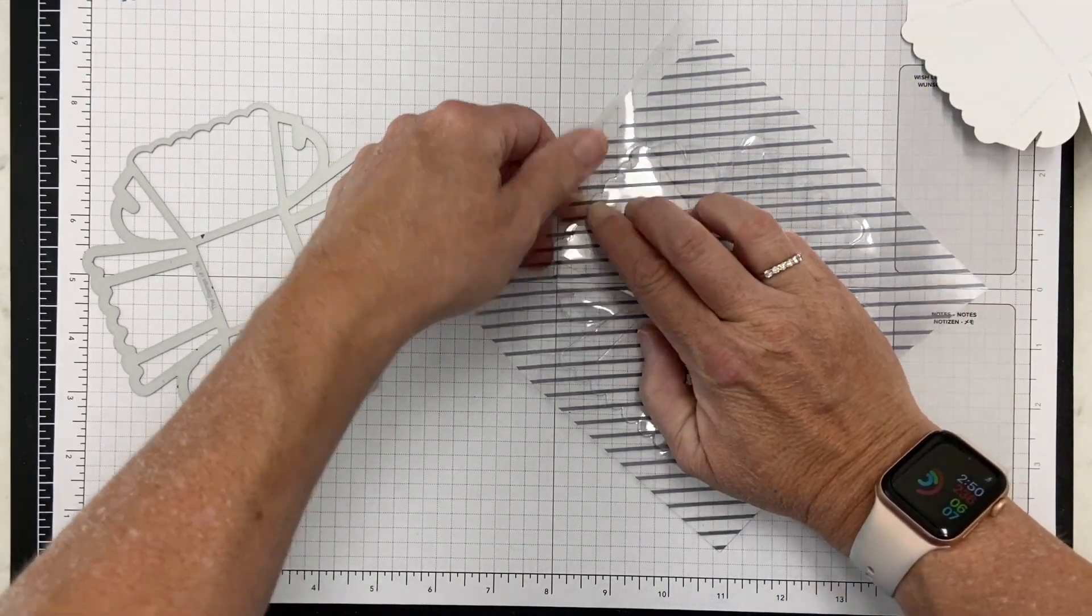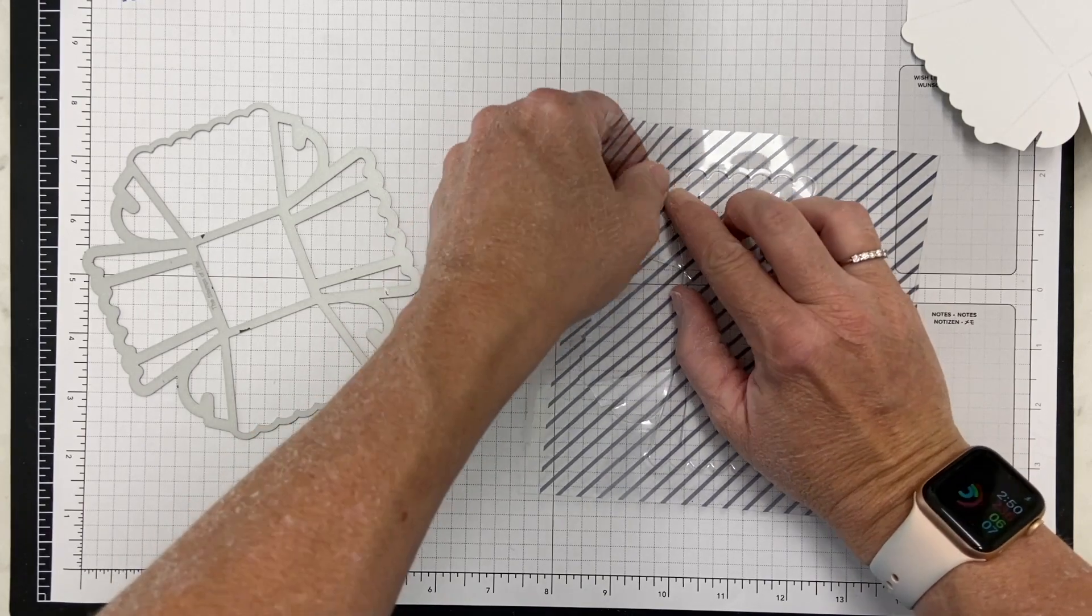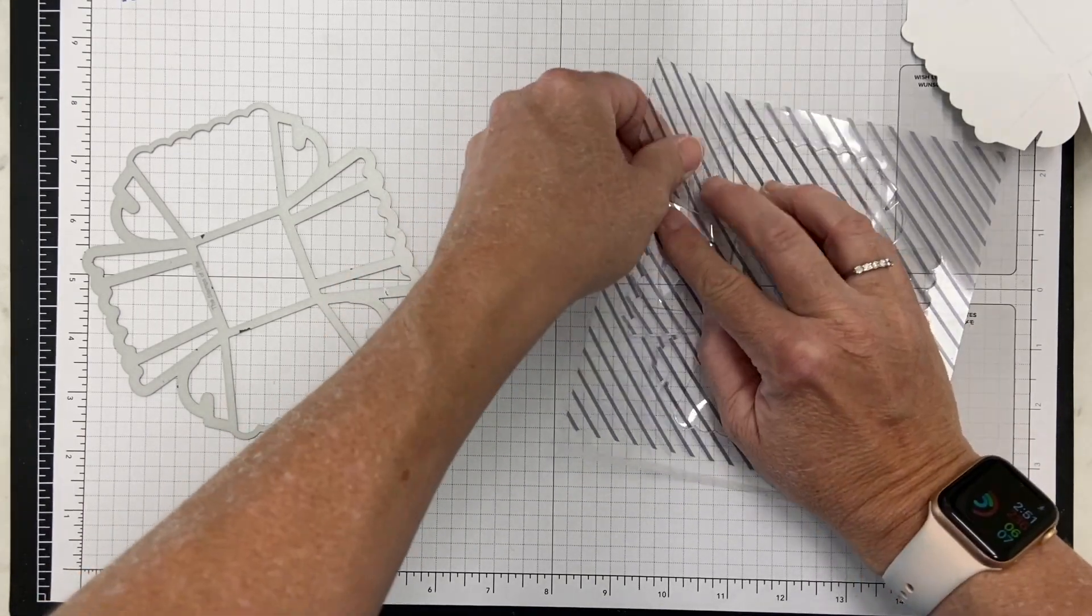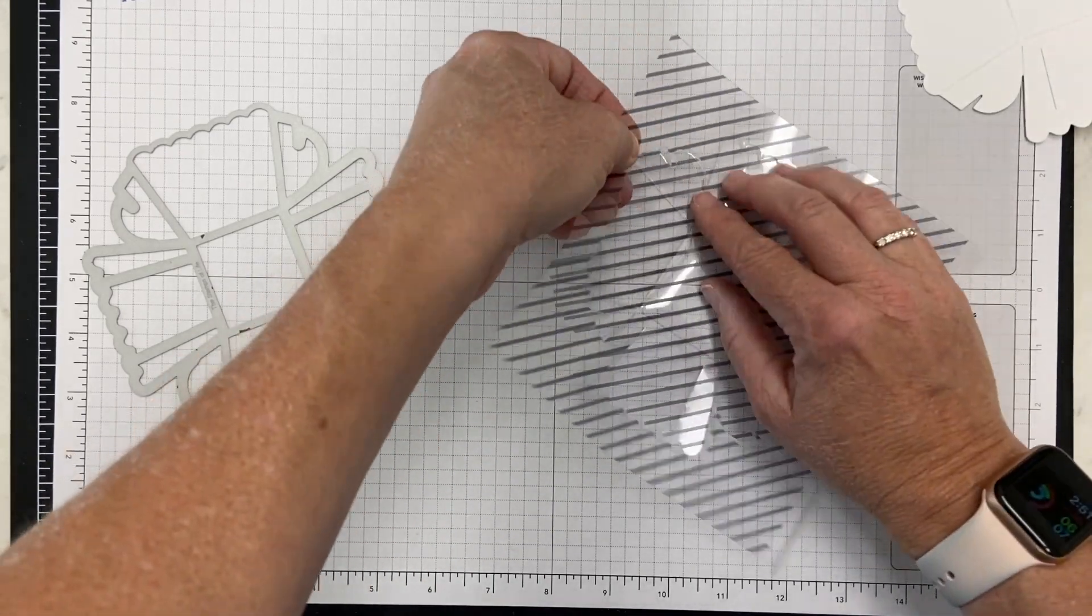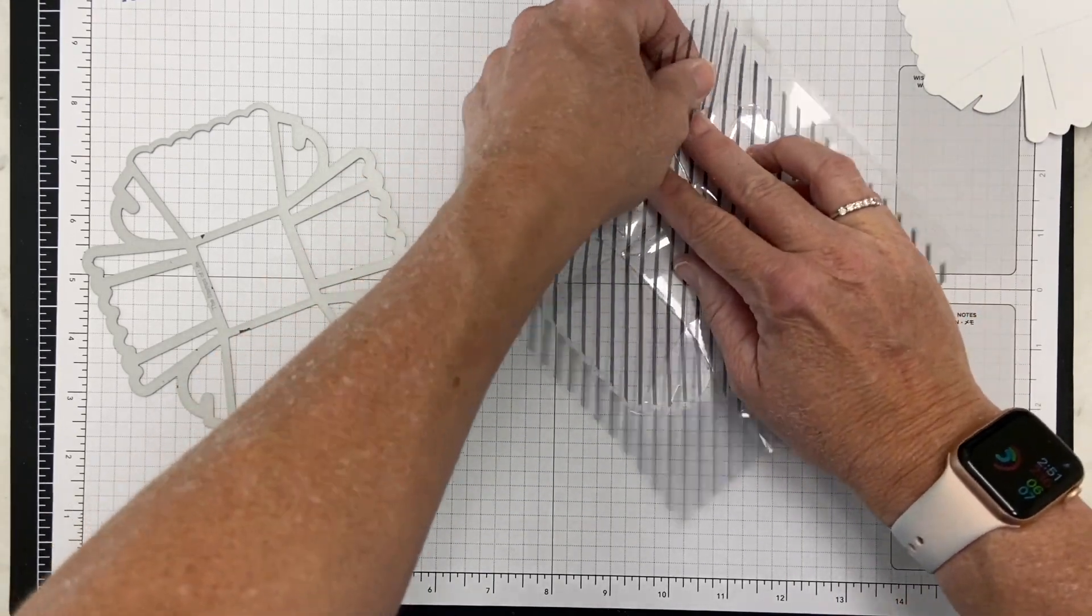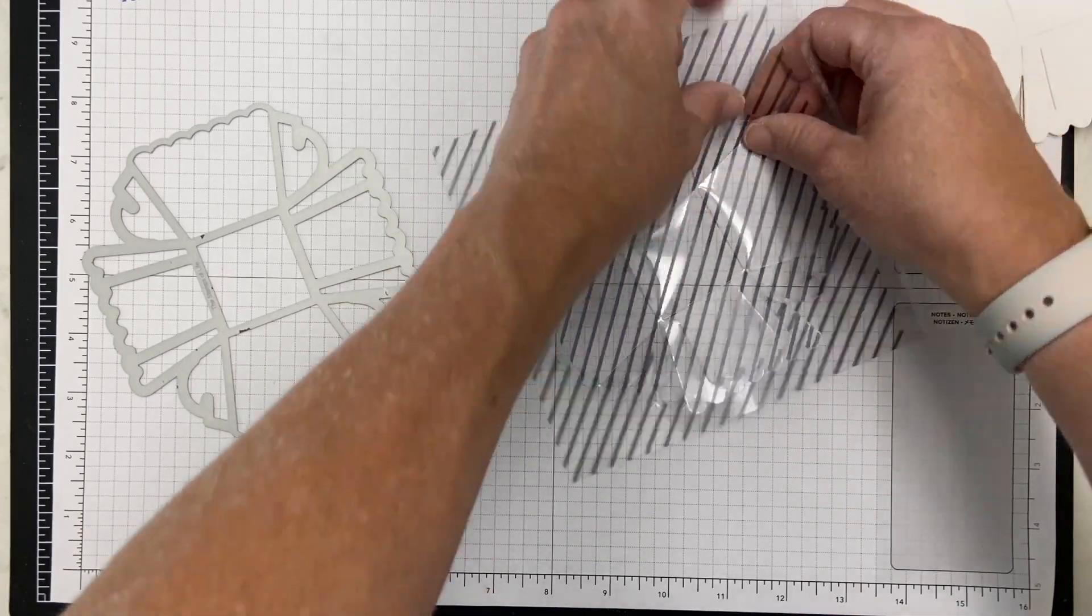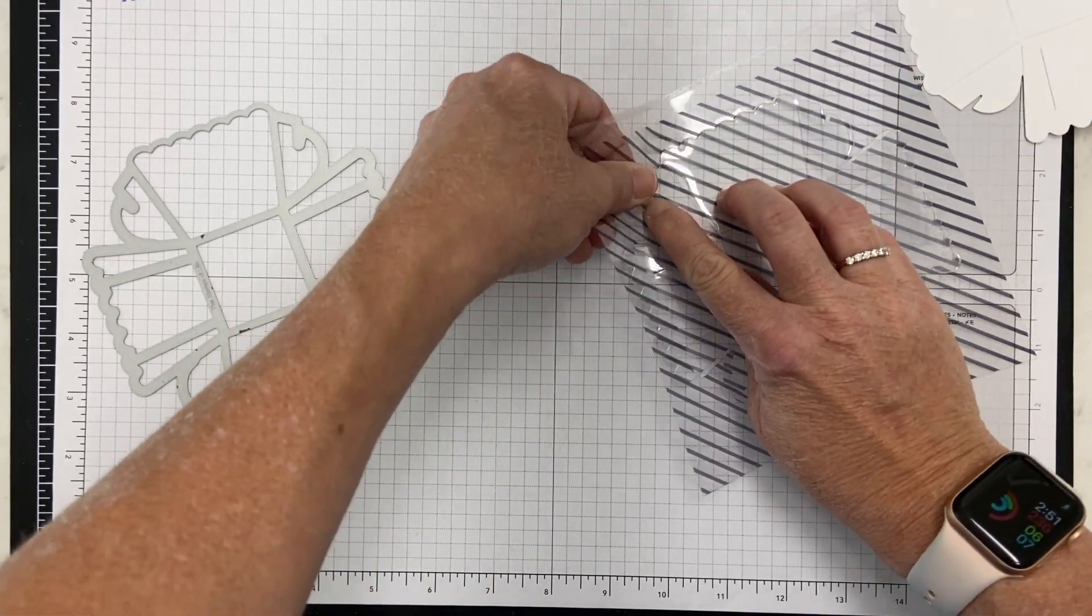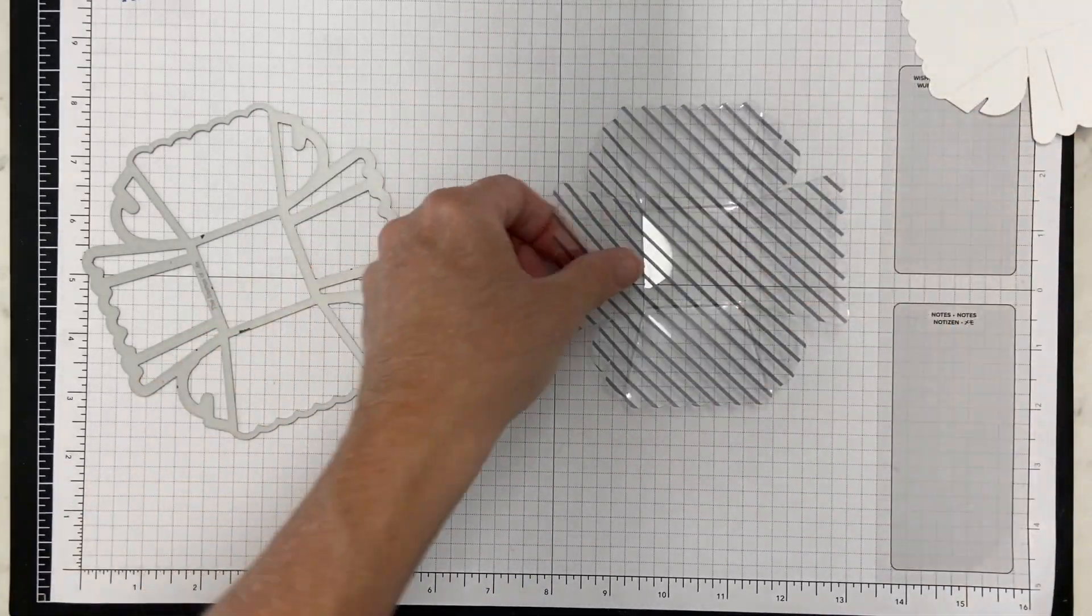For years I used to try and get it to cut and it wouldn't cut, and then I saw a video that said put a piece of cardstock underneath and it cut through. It only took many years. You get a bonus of having a second box that you can use another time. You could decorate that and turn that into a treat box. I'm peeling this acetate away.